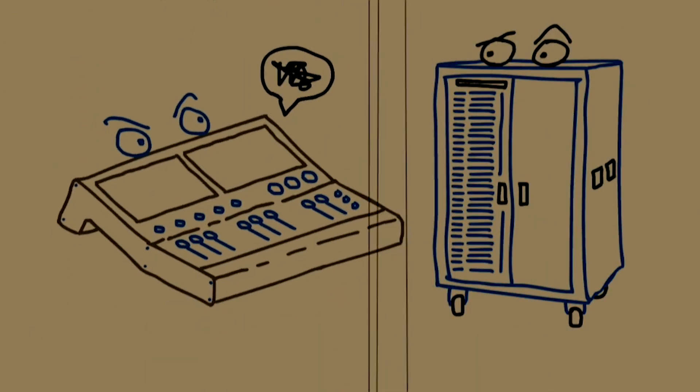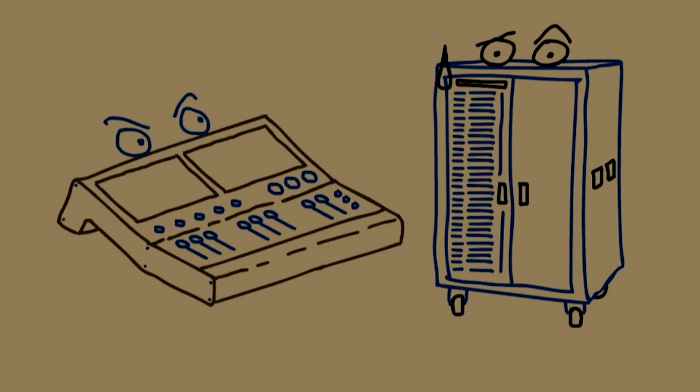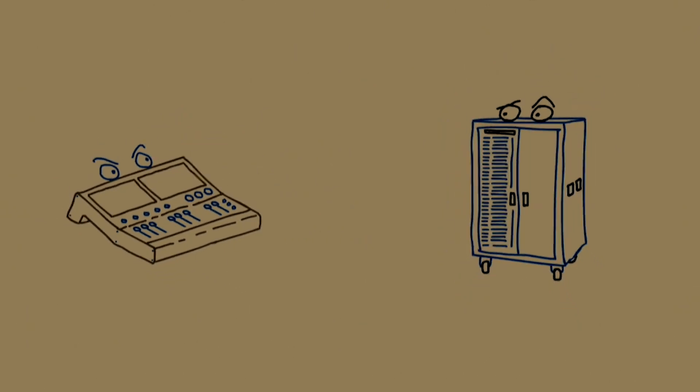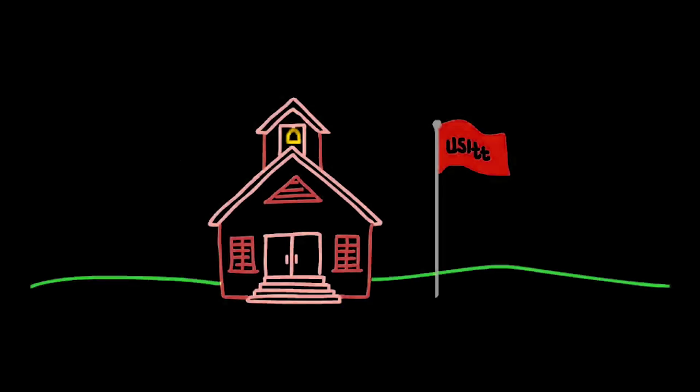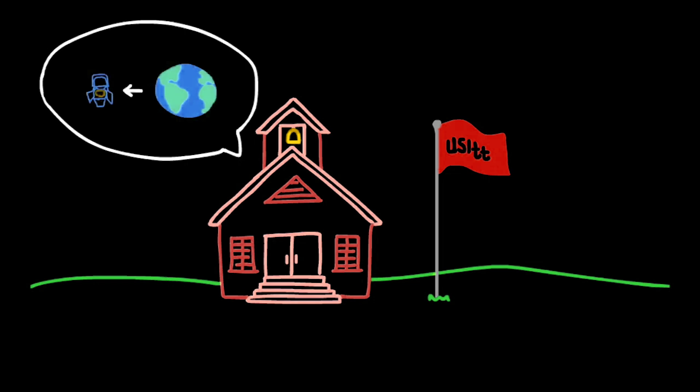Years ago, manufacturers were making consoles and dimmers that couldn't speak the same language. Therefore, couldn't communicate with each other. We had little converter boxes that would interpret the language so that the dimmer could understand the command. It was USITT who finally said, we need to standardize in the world what a lighting system is. When they came to this conclusion, there was DMX.